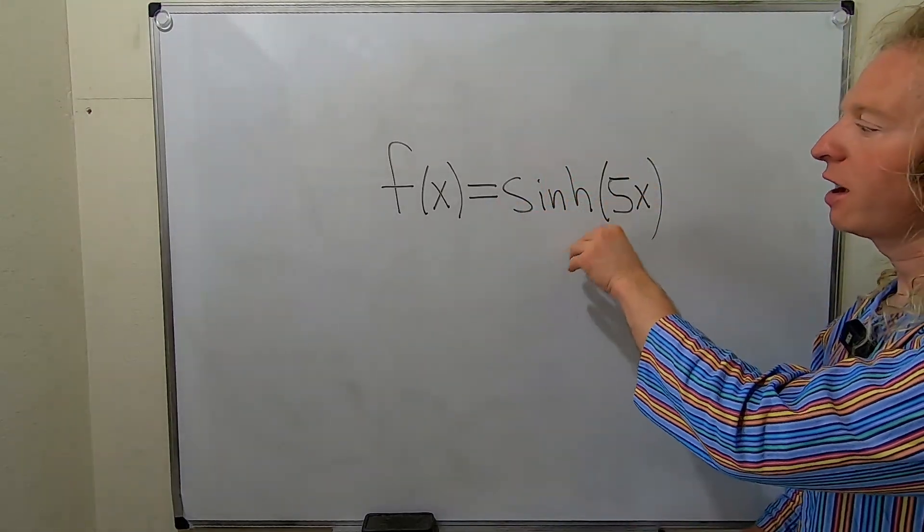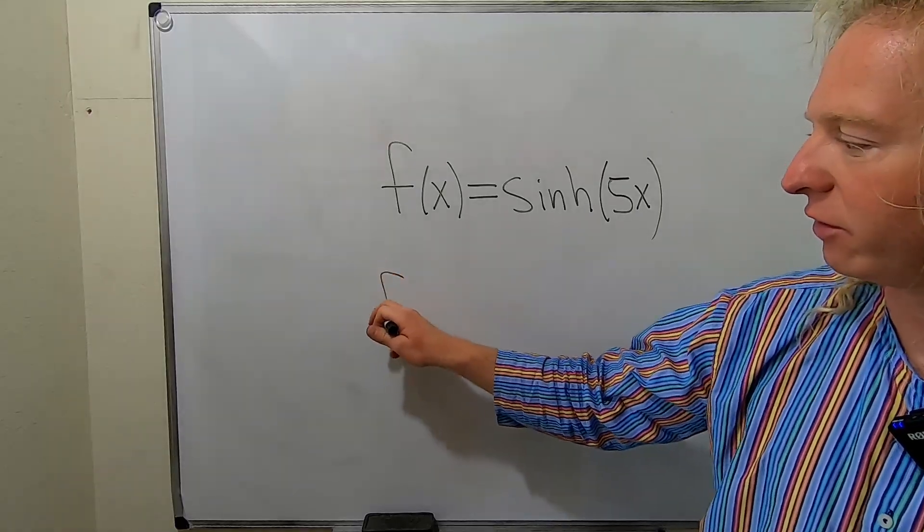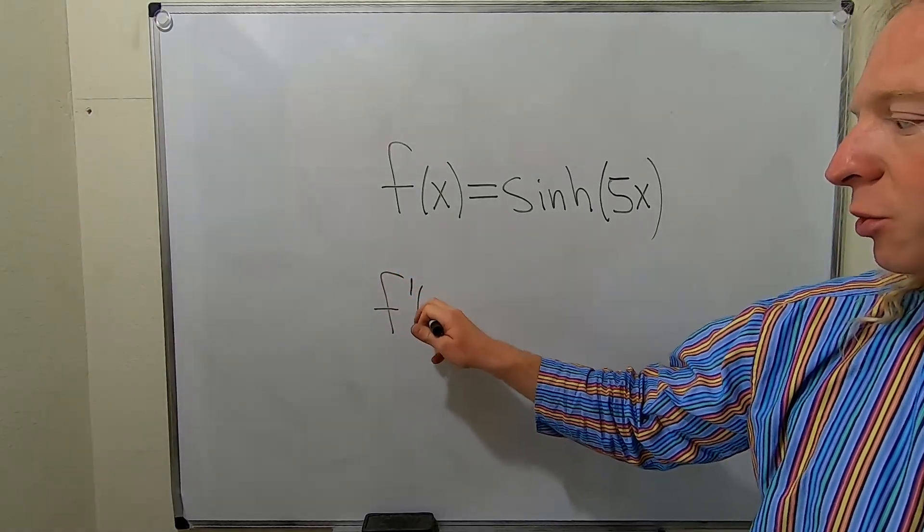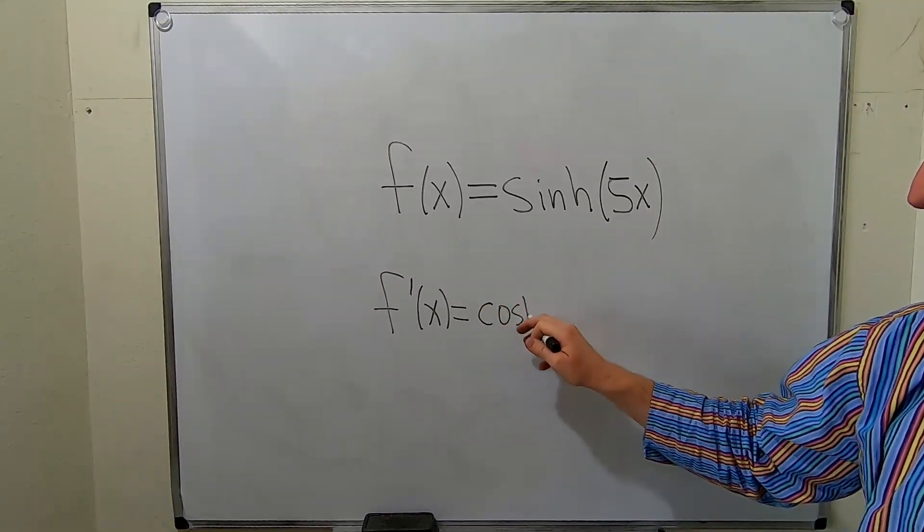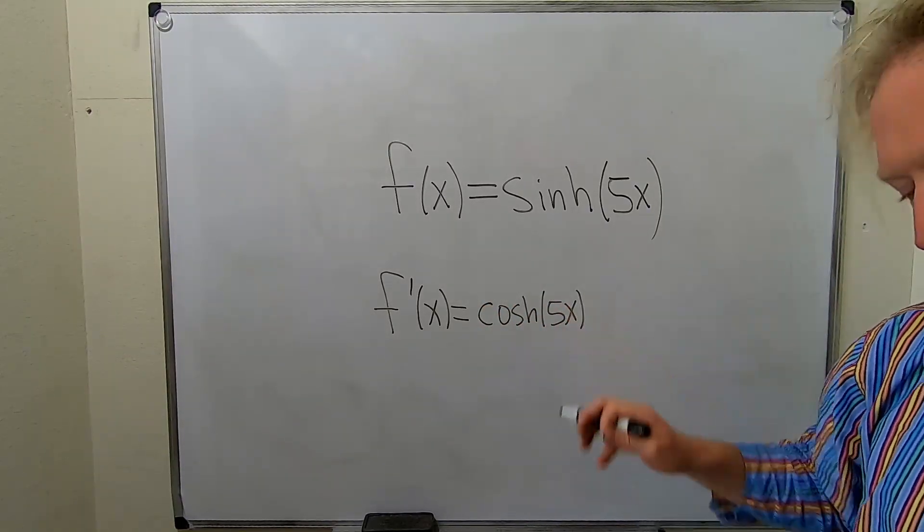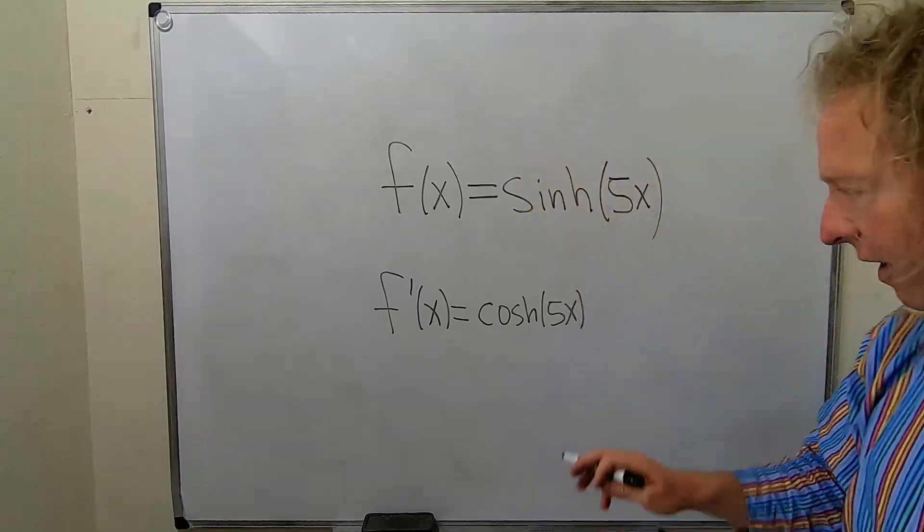So here we have sinh of 5x. When we take the derivative, we have to use the chain rule. So here it'll be cosh of 5x, and then 5x is our inside function, so times the derivative of 5x.